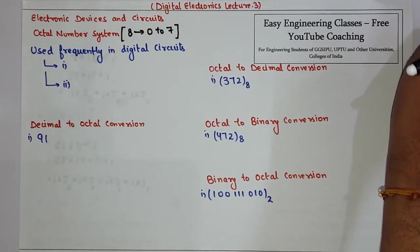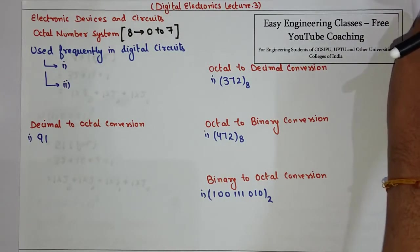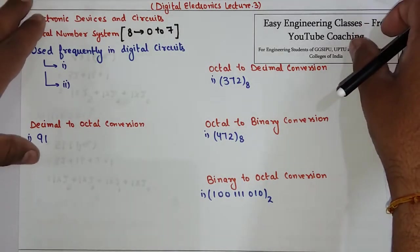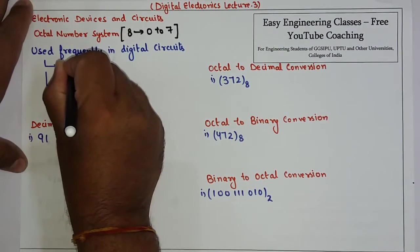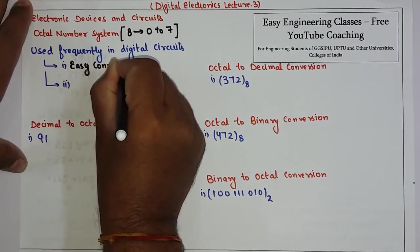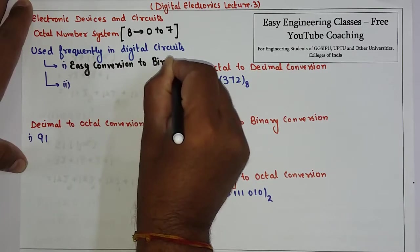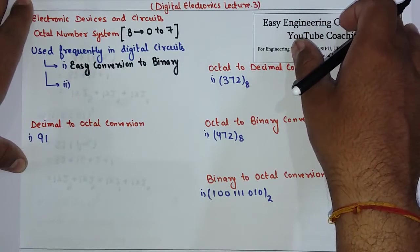The octal number system is frequently used in digital circuits. If you are asked which is the most frequently used number system in digital circuits, the answer is octal. The first reason is that it can be easily converted to binary.